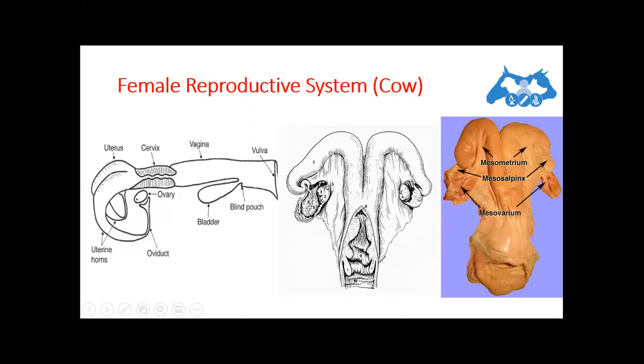If we talk about the suspensory ligaments of the reproductive tract, here are actually three broad ligaments which are named as, starting from the upper side, see on the picture in the right side.